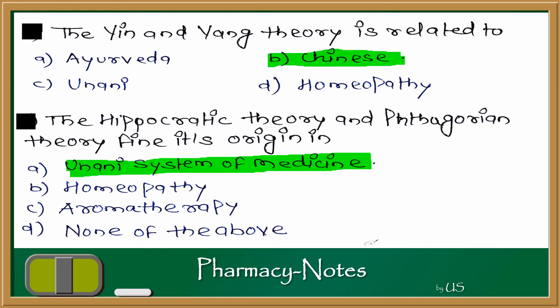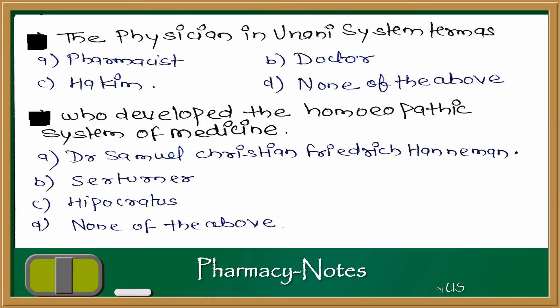Next question: the physician in the Yunani system is termed as what? The options are pharmacist, doctor, hakeem, and none of the above. In the Yunani system of medicine, the physicians who were doing treatment were called the hakeem.